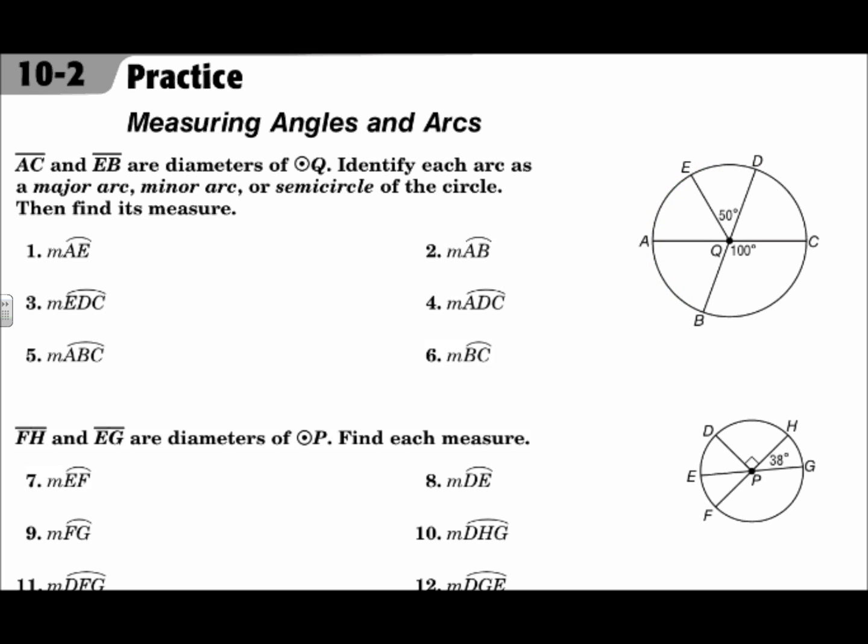The arc measure, which is notated with a lowercase m in front of the arc, is the same as its central angle measure. When you're looking for these angle measures, remember vertical angles are congruent. Remember linear pairs add up to 180. Remember any angles that form a straight line when you put them together add up to 180.